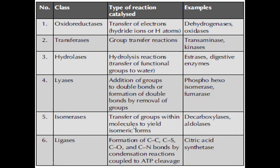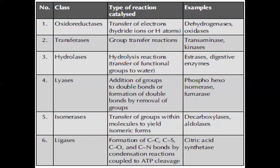The fifth class is Isomerases — they participate in the transfer of groups within molecules to yield isomeric forms. Examples are decarboxylase and aldolase. The sixth class is Ligases — they catalyze the formation of carbon-carbon, carbon-sulfur, carbon-oxygen, and carbon-nitrogen bonds by condensation reactions coupled to ATP cleavage. An example is citric acid synthetase.